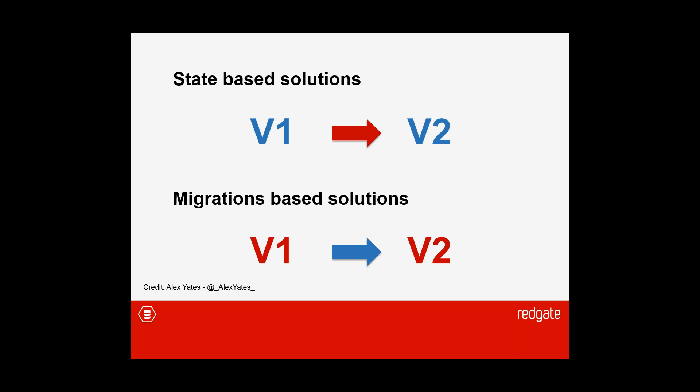Elizabeth agrees: stopping short of aligning database and application version control means you don't get the benefit of knowing what version of the database corresponds to what version of the application — which is one of the biggest things you can get out of this.